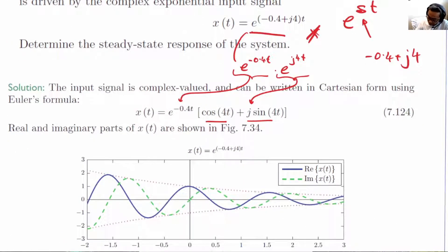You can express it also in this form where e^(j4t) is expressed as cosine 4t plus j sine 4t. And hence, you can plot the real part and the imaginary part of x(t). The dotted line here that you see is e^(-0.4t).